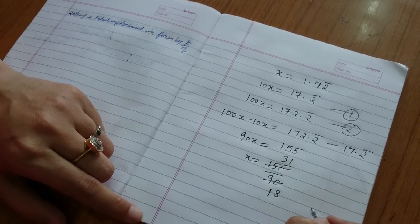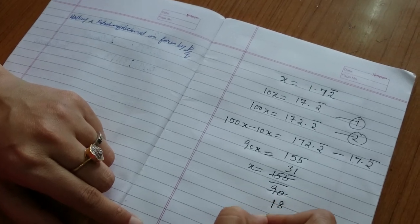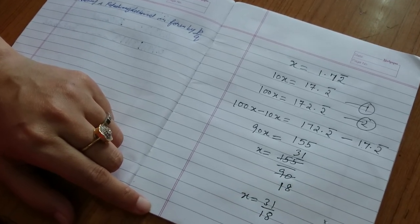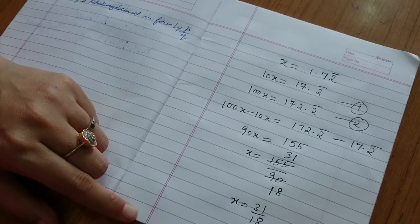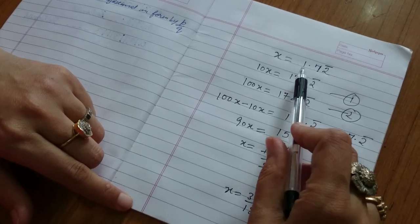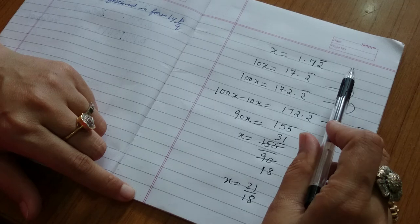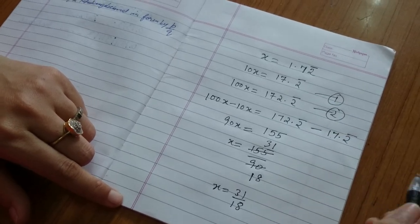So 31 upon 18 is the rational number whose decimal expansion is 1.72222 and so on. Is it okay?